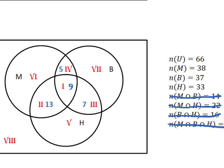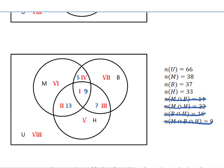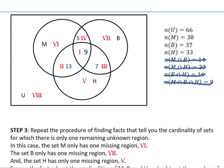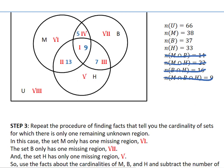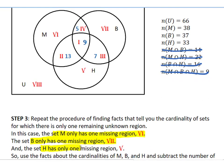All right, so we've used all the intersections, and now we're going to continue in the same way. But now we need to find another set that's only missing one region. For example, the set M only has one missing region, region 6. The set B only has one missing region, region 7. And the set H has only one missing region, which is region 5. So we're going to focus in on those one at a time.